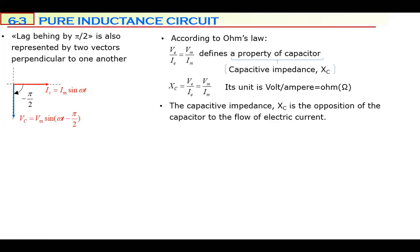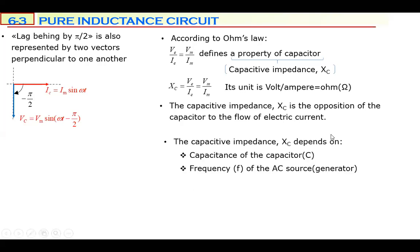Capacitive impedance XC has the same unit as resistance and inductive impedance — ohms. It is the opposition of the capacitor to the flow of electric current, but its nature is completely different. XC depends on capacitance C and frequency F. The equation is XC equals 1/(ωC), or 1/(2πFC). It is the inverse of inductive impedance: XL was ωL, but XC is 1/(ωC).